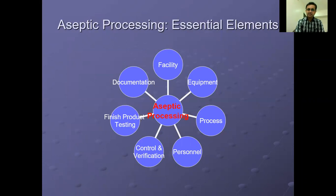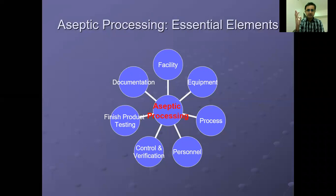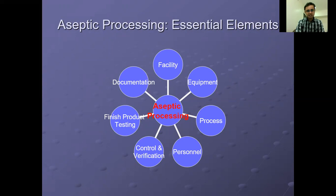The essential elements of aseptic processing are: facility, equipment, process, personnel, control and verification, finished product testing, and documentation.